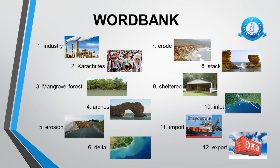Fifth word is erosion — erosion is the process by which the surface of the earth gets worn down. Sixth word is delta — delta is an area of low flat land shaped like a triangle where a river divides into several smaller rivers before flowing into the sea. Seventh word is erode — erode means gradually destroyed or gradually worn away. Eighth word is stack — the thin strip of land above the arch which is worn away by rain and wind and falls into the sea; this bit of land left in the sea is called a stack.